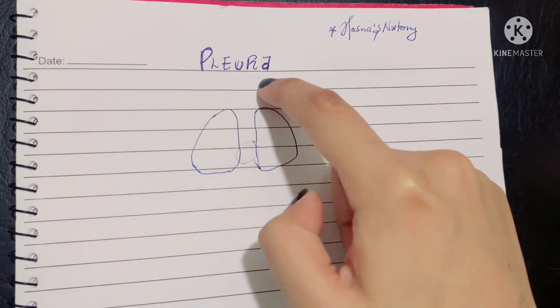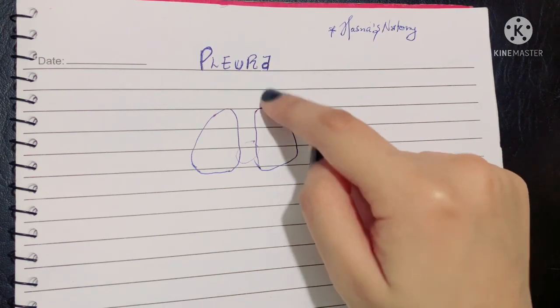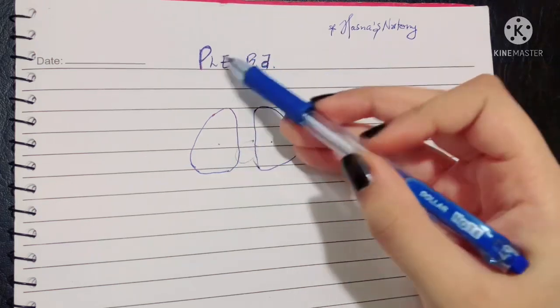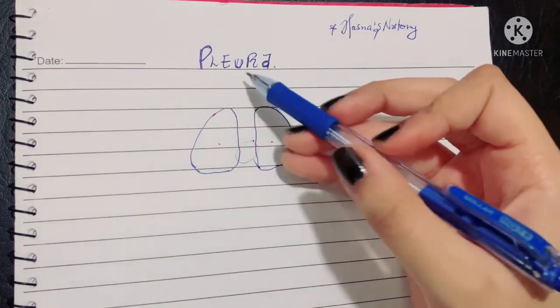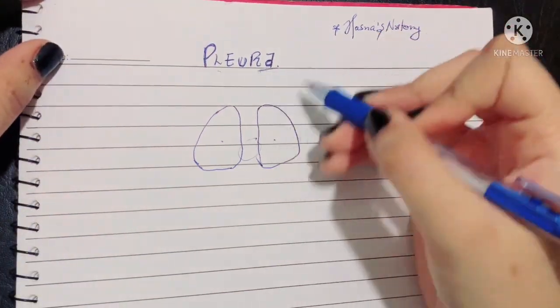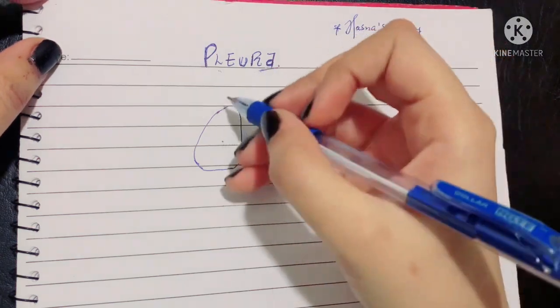It all starts with the pleura. Pleura means a serous membrane or serous lining that lines the lungs. Similar to the pleura, in your abdomen there is the peritoneum that lines your abdomen. Coming back to the discussion of pleura, the lining of the lungs is known as the pleura.